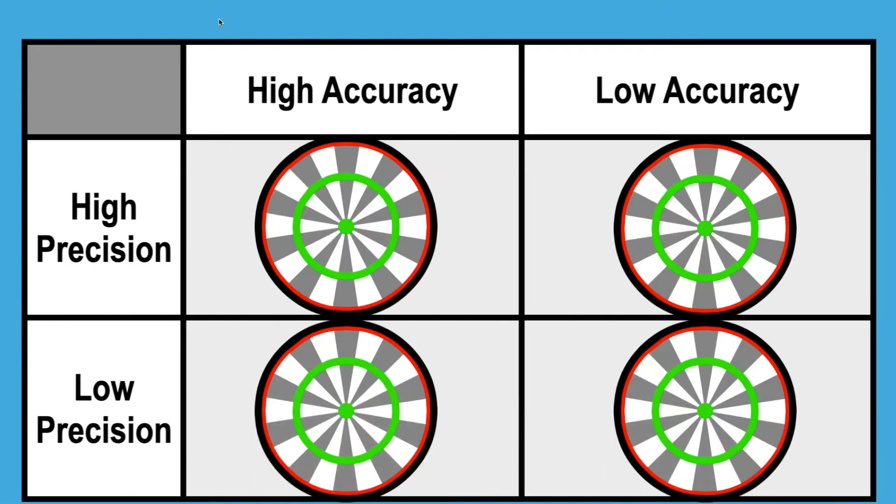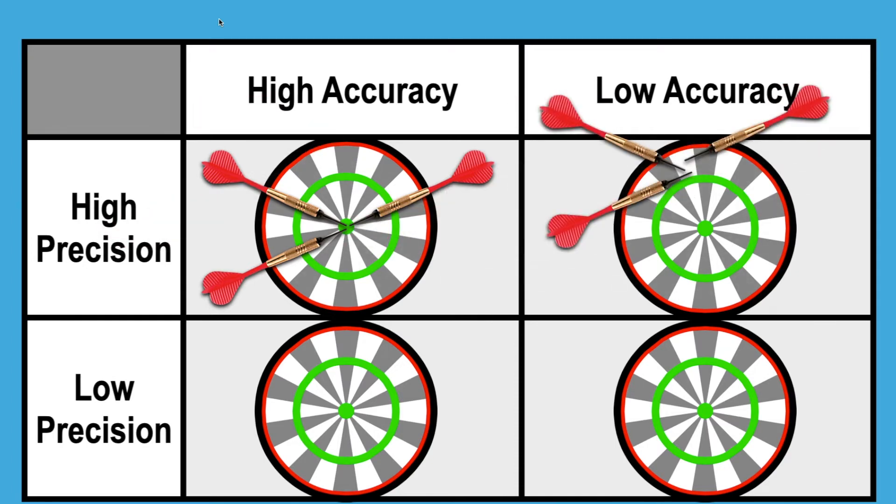That means that if we are picturing these as dartboards, we have four possible situations. You have high accuracy, high precision, where you are getting three shots and you're hitting the bullseye every single time, so good precision, good accuracy. Here we have an example of high precision with low accuracy, where you're not hitting the bullseye but at least your shots are all really close to each other.